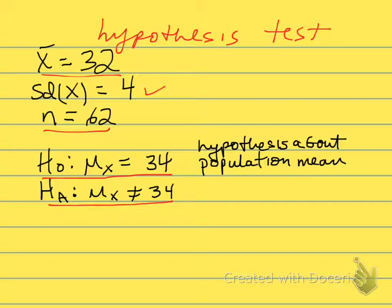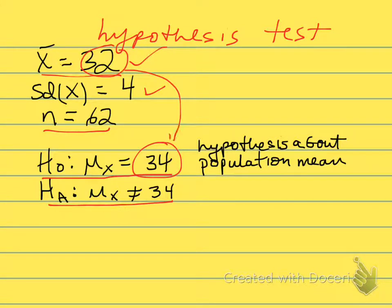The sample mean is 32 and the null hypothesis is that it's 34. We want to know: is this 32 consistent with 34, or should we reject our null hypothesis that the population mean is 34? Presumably we would revise it downward since we found a sample mean a little bit lower than 34.